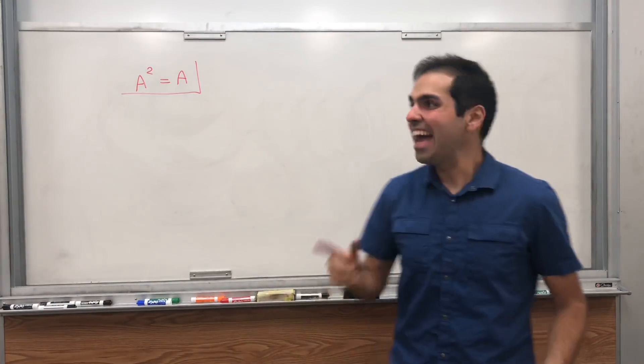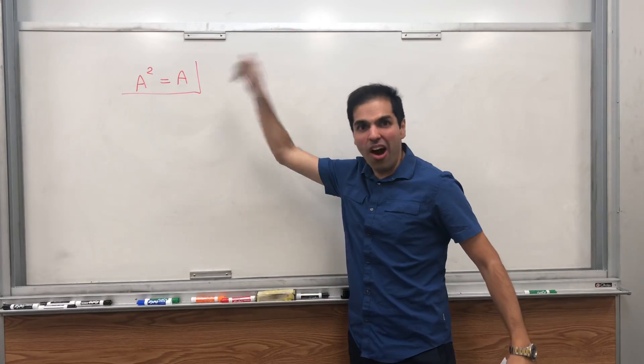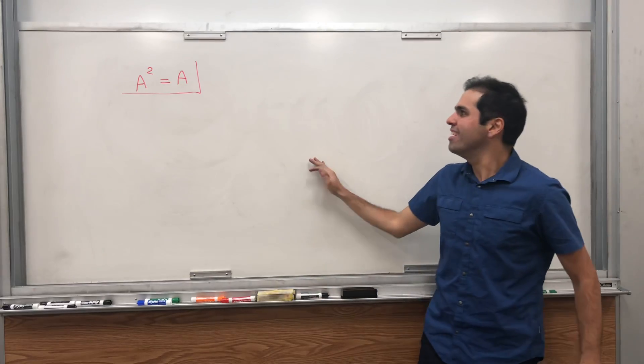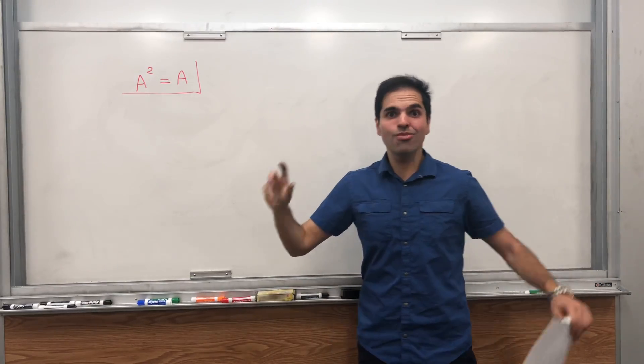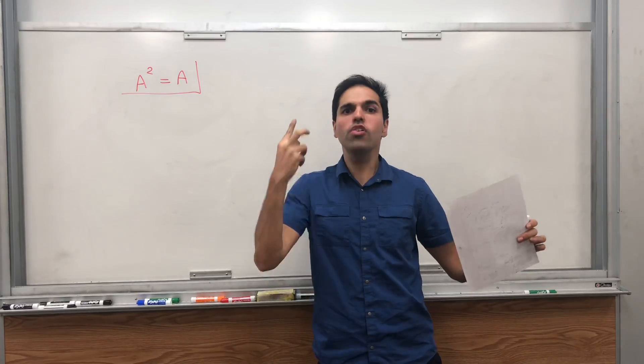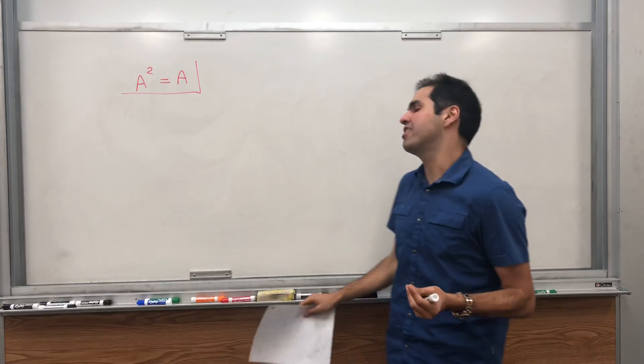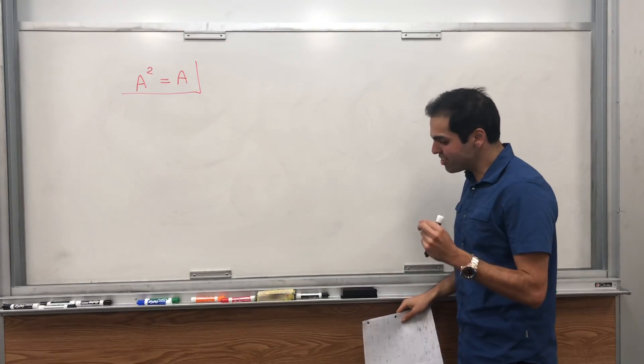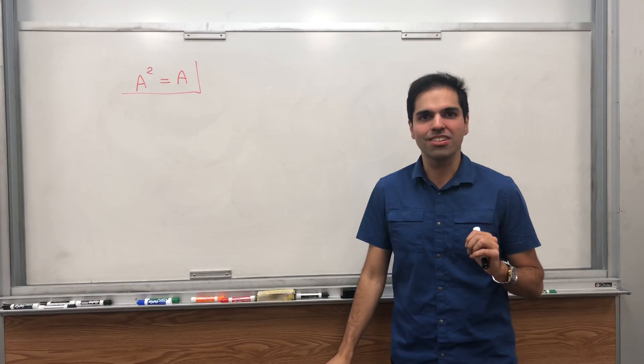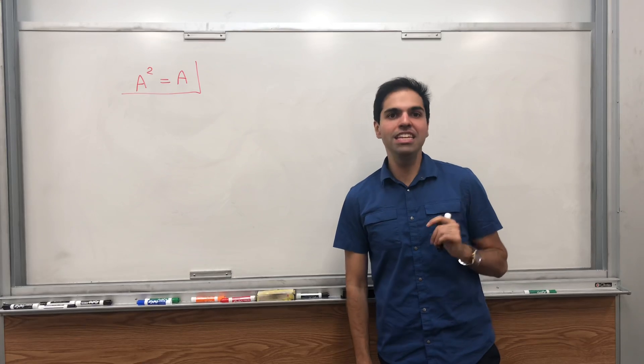All right, thanks for watching. Today I want to do something really cool. I want to find all the matrices whose square is equal to itself, and I will do this without any calculation. I will just use pure linear algebra theory, which tells you that this theory is actually very important. And also what I like about this, there's a very nice geometric interpretation to this. This is why linear algebra is sometimes called linear geometry.